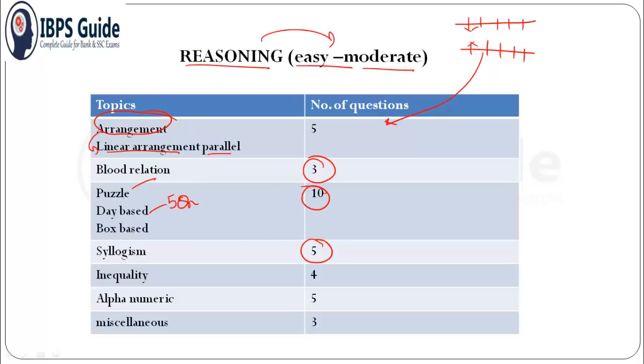Each carried five questions, total ten questions. Syllogism was asked which carried five questions. If you're not familiar with the new pattern syllogism they've been asking - that is the 'only few, a few only' type syllogism.